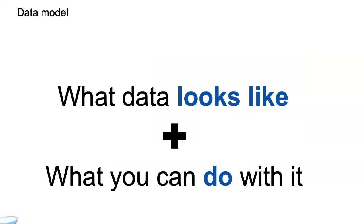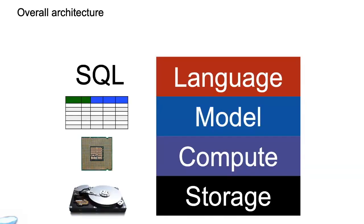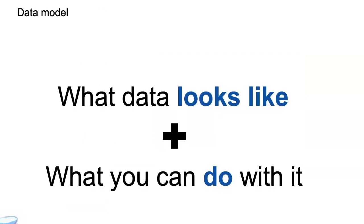So what is a data model? Because since I talk about data independence, I like to focus on the data model and the language, right? So a data model is basically two things, typically. It's a description of what the data looks like, plus a description of what you can do with the data, how you can manipulate it, update it, query it, and so on. So it's these two things together.